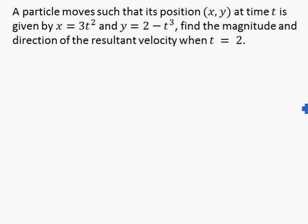In this video, I'm going to talk about magnitude of velocities as well as the direction of velocities. The typical question looks something like this: a particle moves such that its position (x, y) at time t is given by x = 3t² and y = 2 - t³, find the magnitude and direction of the resultant velocity when t = 2. So there are two things you need to find. One, magnitude. Two, direction.